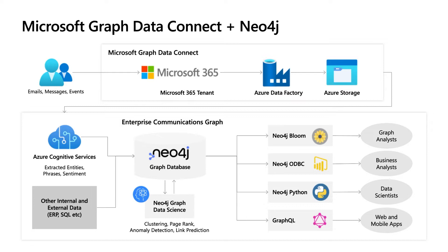Neo4j provides a variety of ways that the data can be surfaced for analysis. We're going to look at Bloom visualization. We have an ODBC connector that allows you to connect to Power BI. There's a Python driver, so data scientists could directly interact with the Neo4j database using common tools like Jupyter. And we have a rich set of APIs like GraphQL, which we'll take a look at, that can support web and mobile applications for real-time analysis and alerting based on the Microsoft Graph Data Connect data.